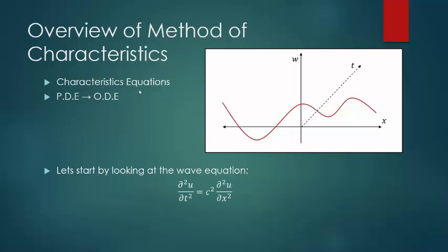For our case, we're going to be looking at the wave equation that we are very accustomed with: u with respect to t twice equals c squared times u with respect to x twice. We're going to write this equation a little differently — we'll bring the right side over to the left, so we have u_tt minus c squared u_xx is equal to zero.